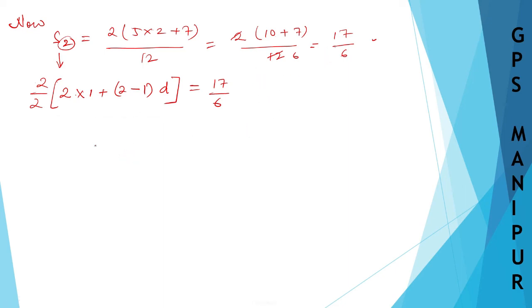Now, let us calculate. 2 divided by 2, it is 1. So, write down 1 here. 2 into 1, 2 into 2 plus 2 minus 1, it is 1. 1 into D, it is D. D is equal to 17 divided by 6.